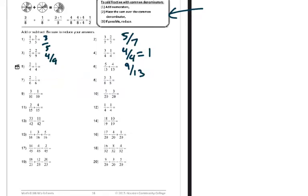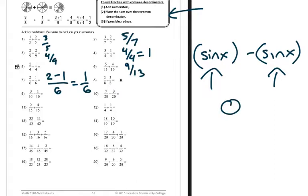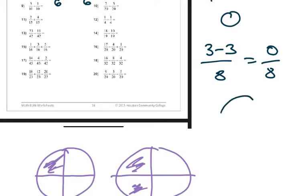In subtraction it's the same thing. Two-sixths minus one-sixth is two minus one over six, which is one-sixth. Three-eighths minus three-eighths - this is a very important idea in math. It doesn't even matter what it is. If I give you something strange like a sine function minus a sine function, because these are the same thing, they're going to subtract out and get zero. You can think of it as three minus three over eight, which is zero over eight.